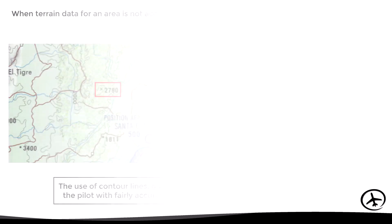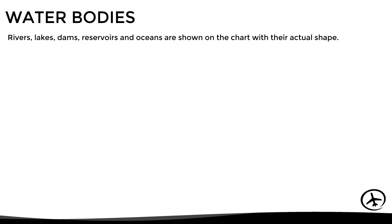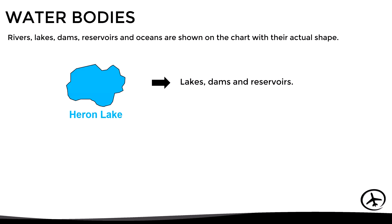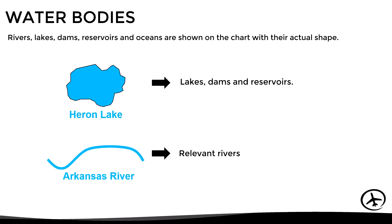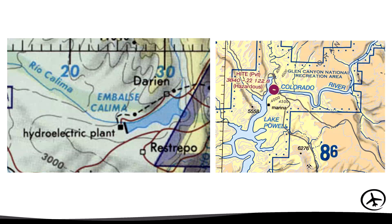VFR charts also depict features that can be used as visual reference for navigation, such as water bodies like rivers, lakes, dams, reservoirs, and oceans, which are represented with their actual shape and name in blue.